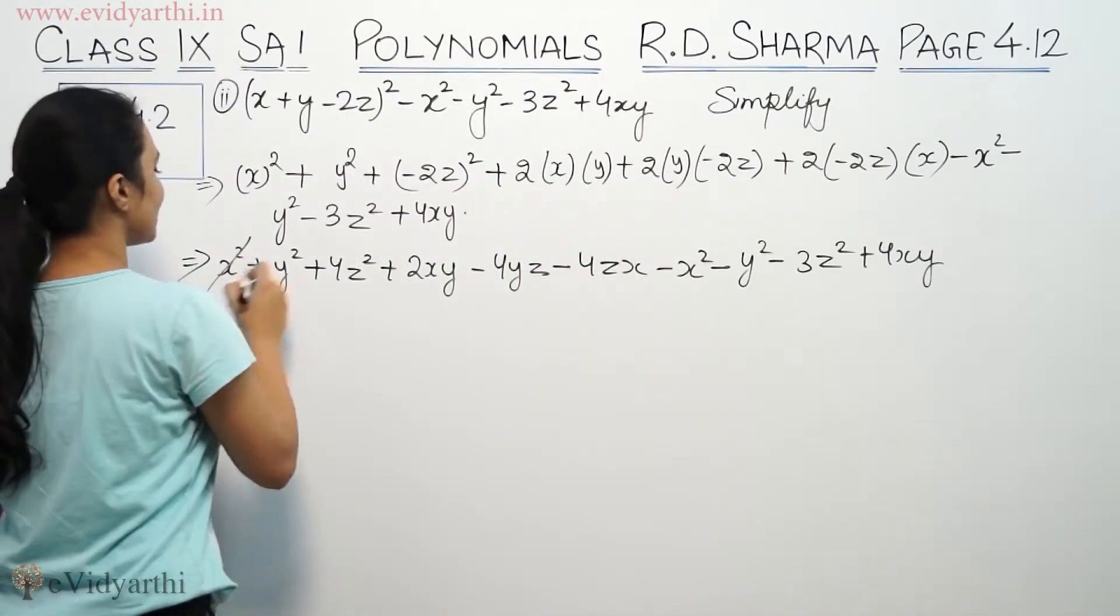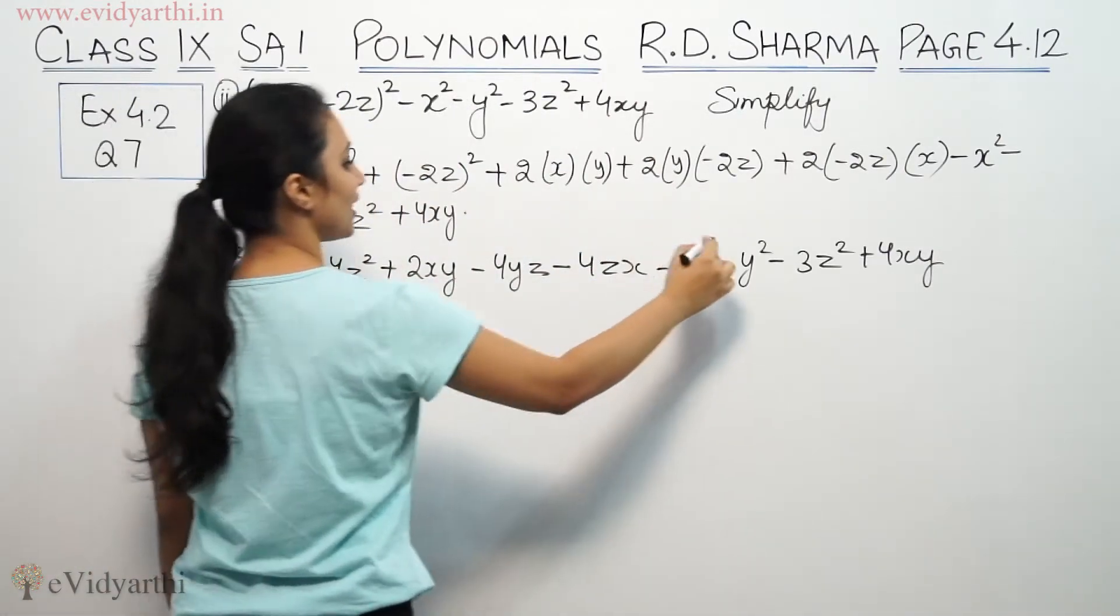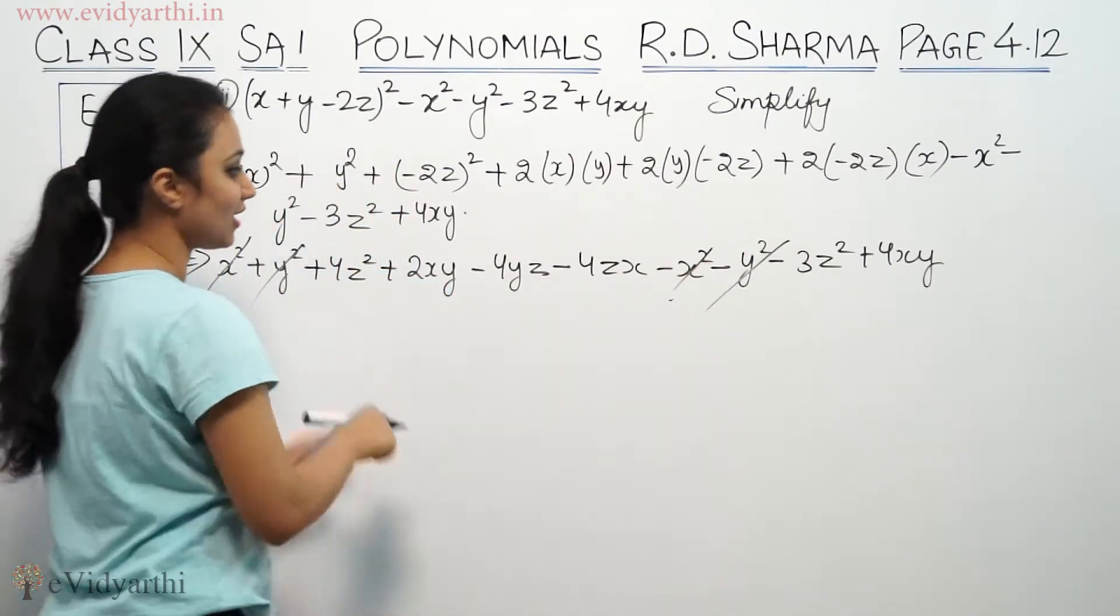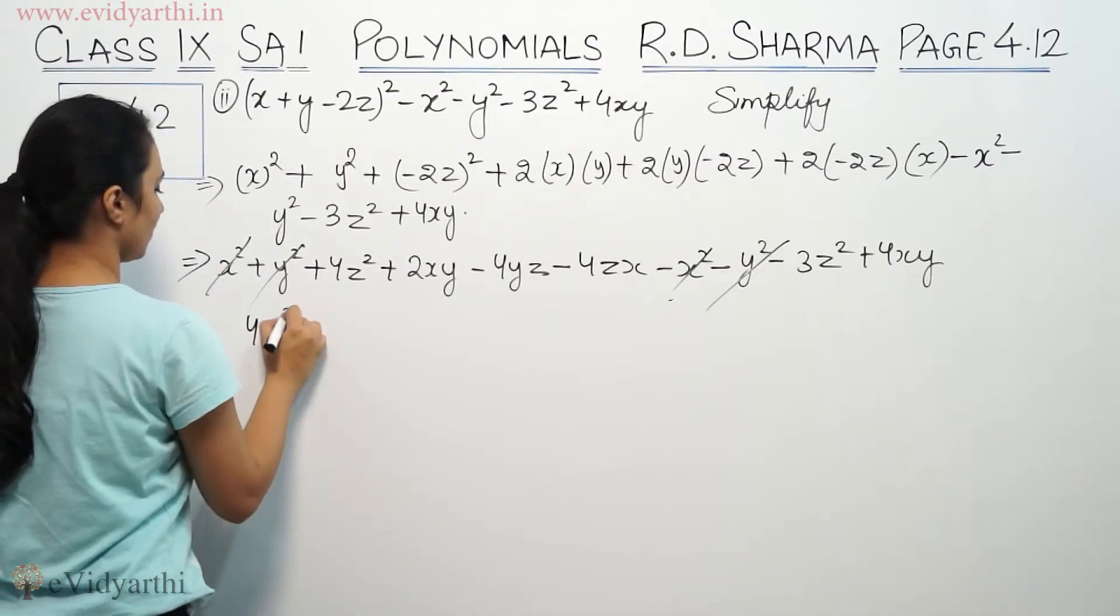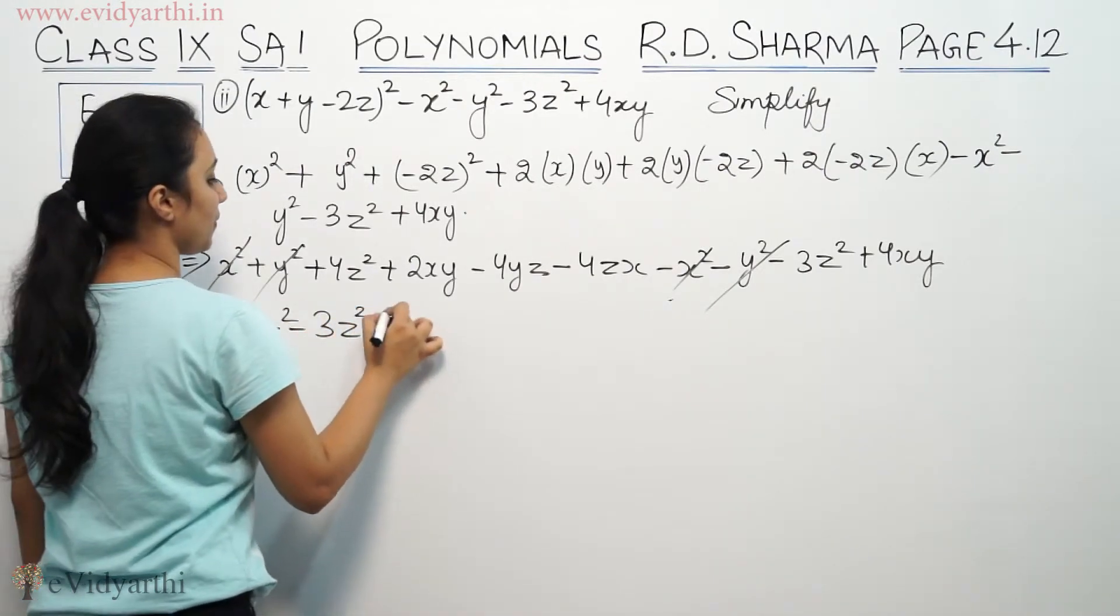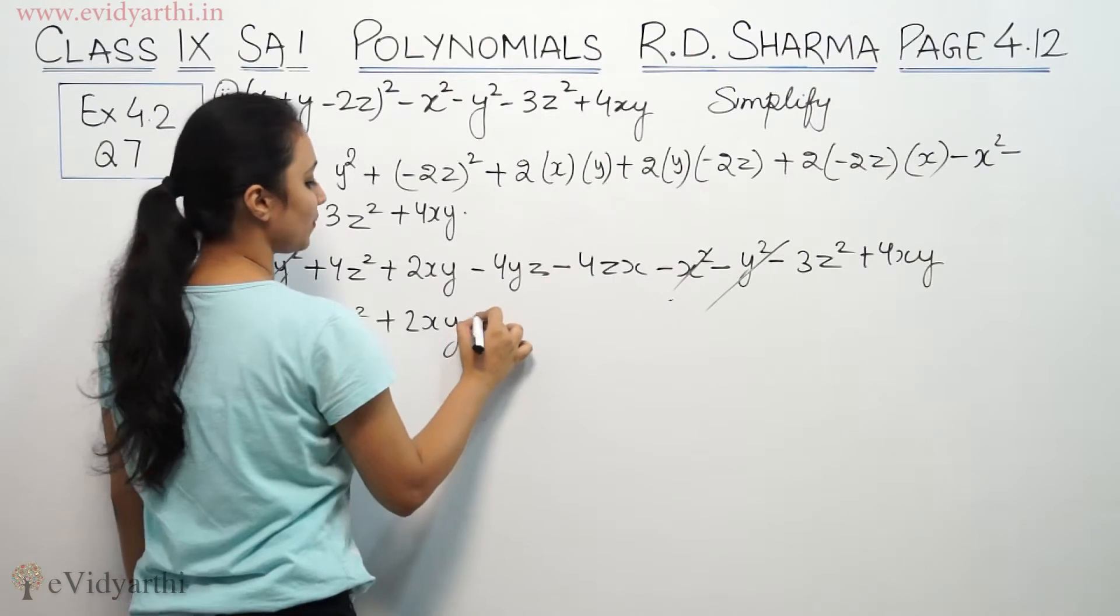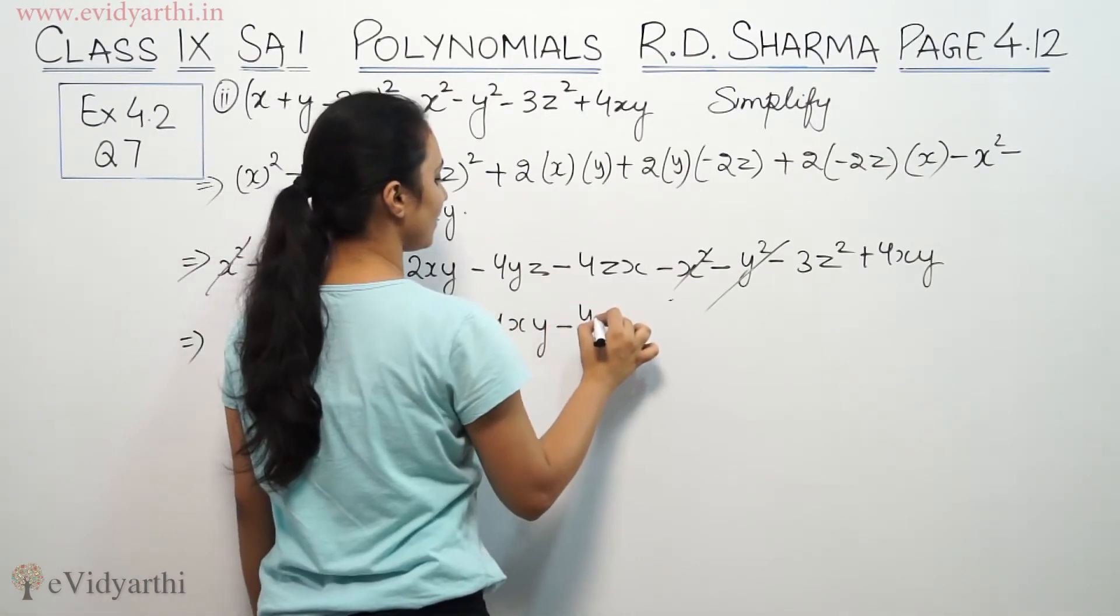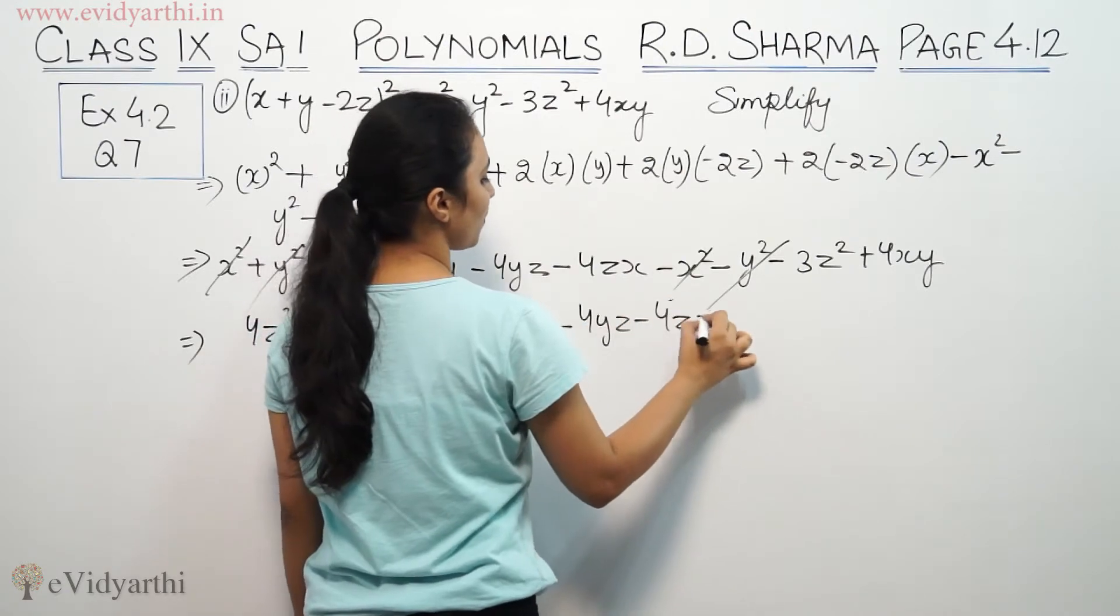Here we have x² plus x² plus y². You do as it: 4z² - 3z² + 2xy + 4xy - 4yz - 4zx.